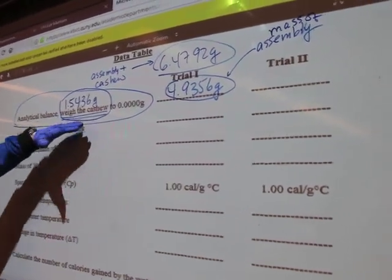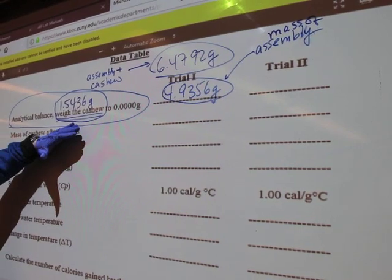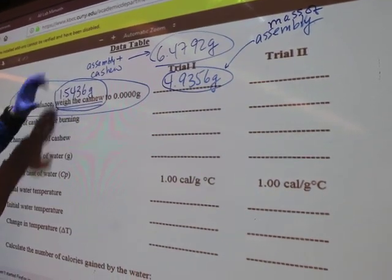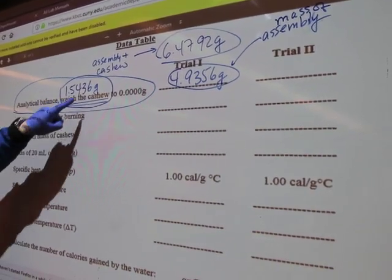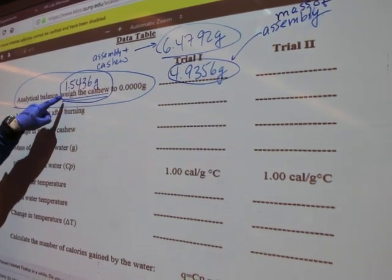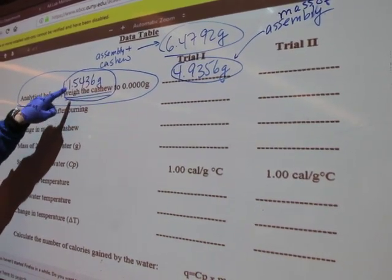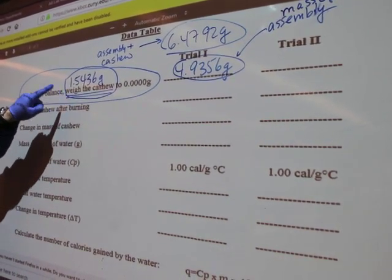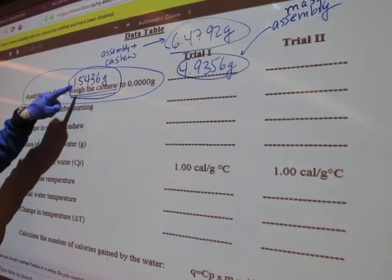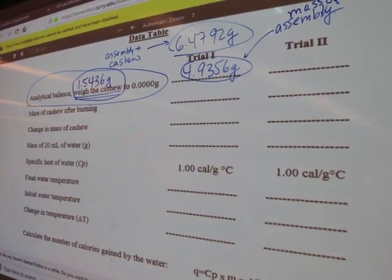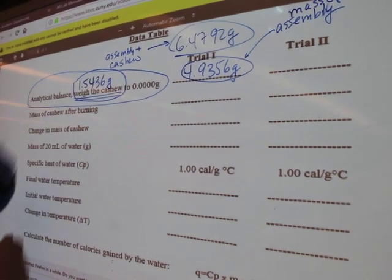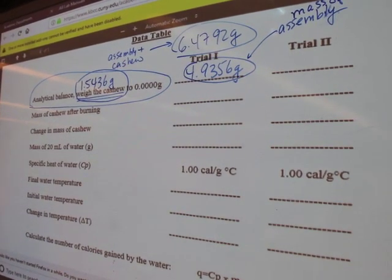We're going to use this mass at the end of the experiment. I specifically put this mass above the term that it represents—it is the mass of the cashew by itself. Now that I completed this step, we're going to the next step.